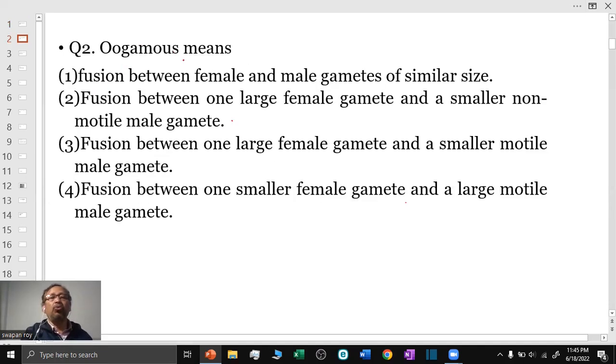Question 2: Oogamy means the fusion between one large female gamete and a smaller motile male gamete. The female gamete is massive and passive.